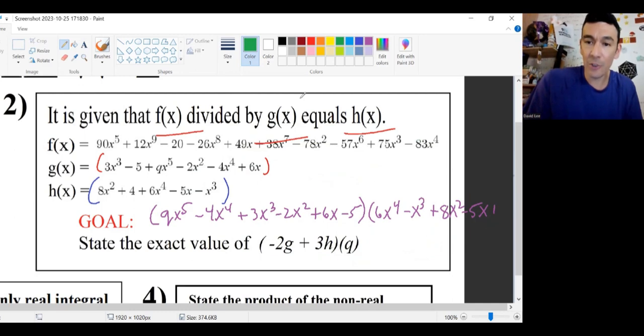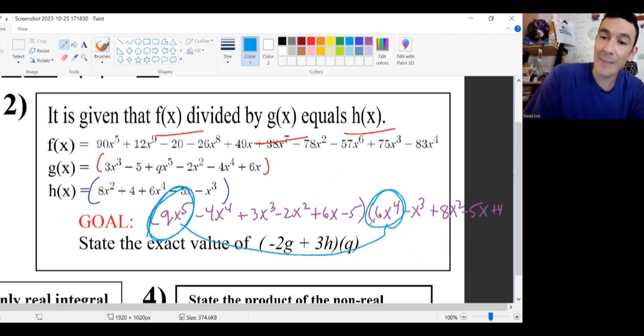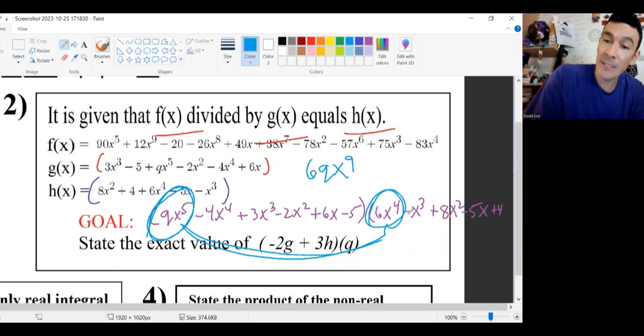Just watch the shortcut here. If I go light blue, if I go this here times that there, that would be q times 6, which is 6q. That would be x^5 times x^4, which is x^9. And then if I were to continue to distribute, I'd get a bunch of other pieces.